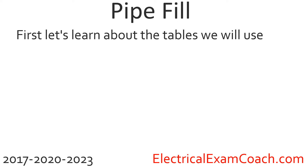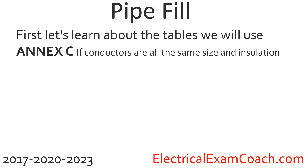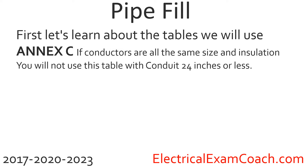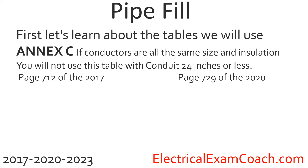Let's learn about the table we'll use when they are all the same size. We're going to use Annex C — if you've tabbed your codebook, you have an Annex C tab. If the conductors are all the same size and insulation type, we get to use a cheat sheet in Annex C. It's one of my favorite tables in the codebook. You will not use this table if the conduit is 24 inches or less — the codebook calls those nipples. For those, use the method in lesson 7.2. You can head to page 712 of the 2017 edition, page 729 of the 2020 edition. This video is 2023 compatible — find your page number for Annex C and follow along.